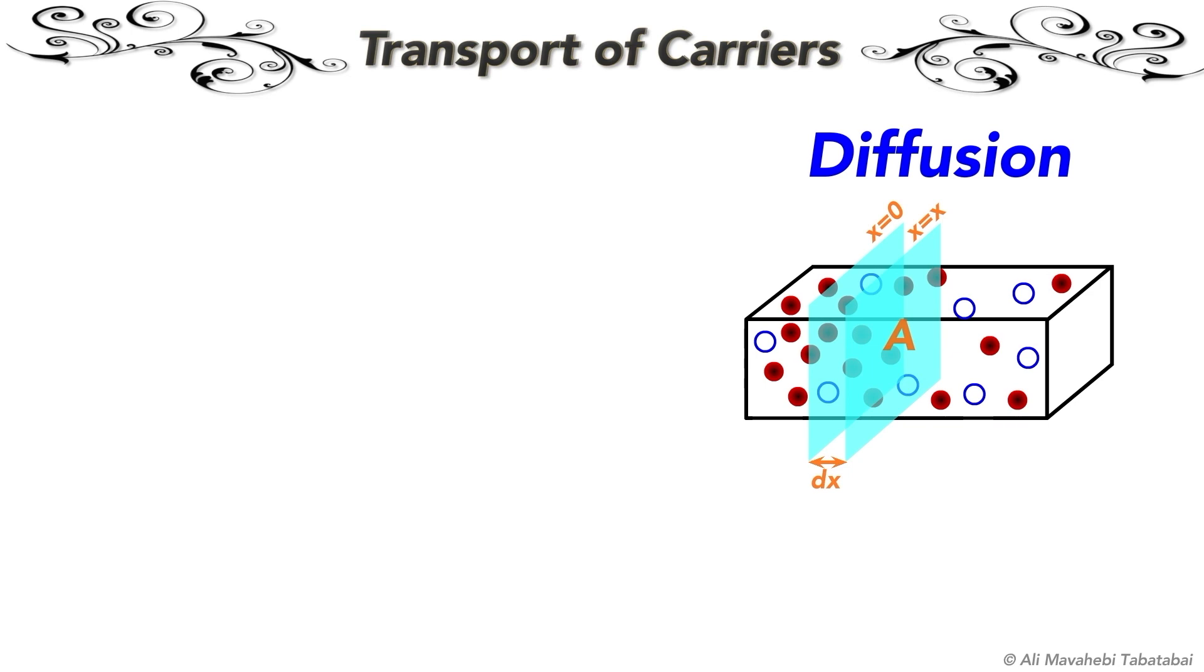This process is called diffusion and the electric current produced due to this process is known as diffusion current.